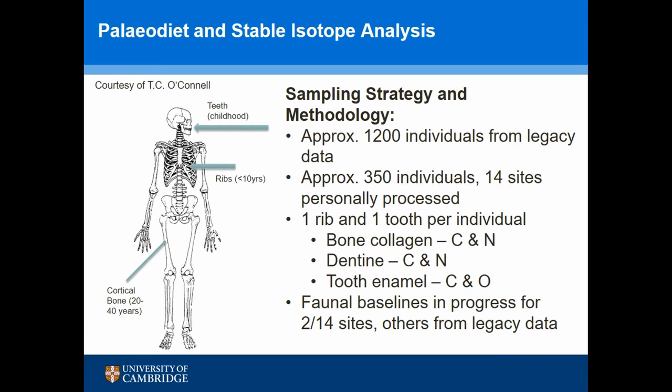I'm also using oxygen from enamel to look at mobility — and if anyone would like to give me extra money to do strontium, please feel free to chuck me a grant. I already have approximately 1,200 individuals from pre-published data incorporated into a meta-analysis, and personally I'm analysing about 350 individuals across 14 sites — roughly 700 samples for carbon and nitrogen and about 300 for carbonate. For faunal baselines I only have well-contextualised fauna from two of my 14 sites, so I'm drawing on pre-published data for baselines.